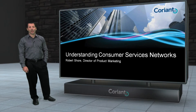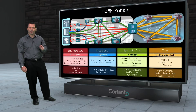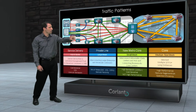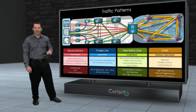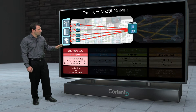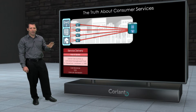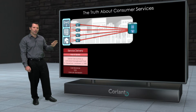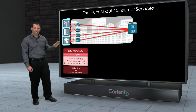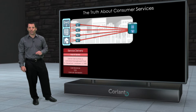Hi, I'm Rob Schor, Director of Product Marketing for Coriant. In this video, I want to take a look at consumer services. From some of my previous videos, we talked about all the different types of traffic flows in transport networks. But in this video, I want to focus very specifically on the service delivery network — the consumer services network. There are a couple of very prominent myths and misconceptions about traffic in this part of the network that often lead people to make bad decisions about how to build their networks and where to put their critical resources.